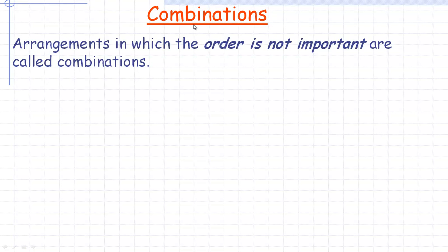In this video, we're going to take a look at the topic of combinations. A combination is an arrangement in which the order isn't important — we often call them groups — as opposed to a permutation. A permutation has a specific order, and using the same objects but changing the order makes a different permutation. But if order is not important, that's called a combination.